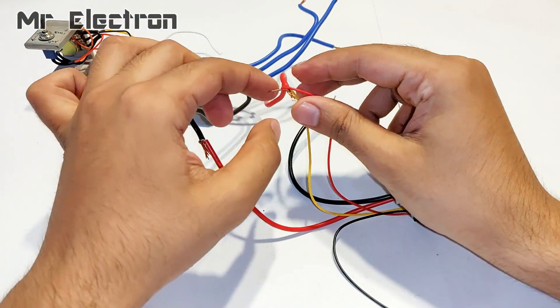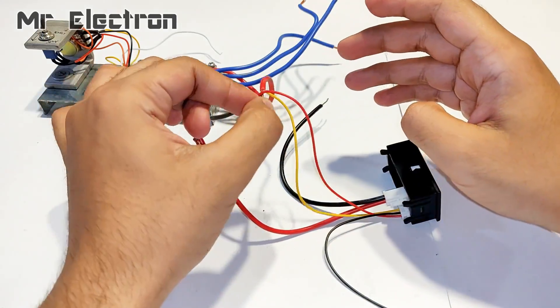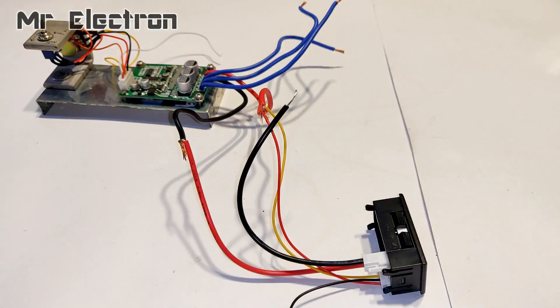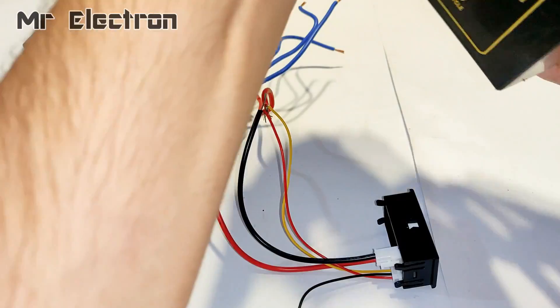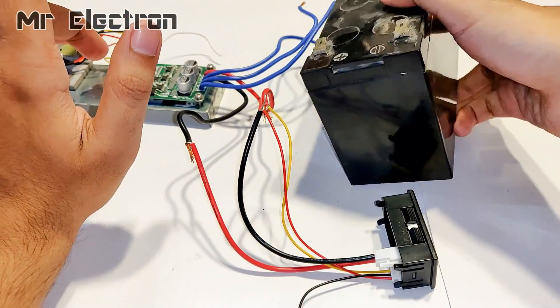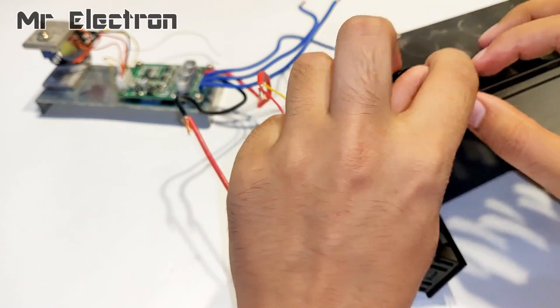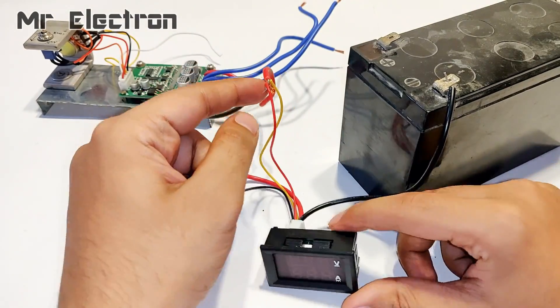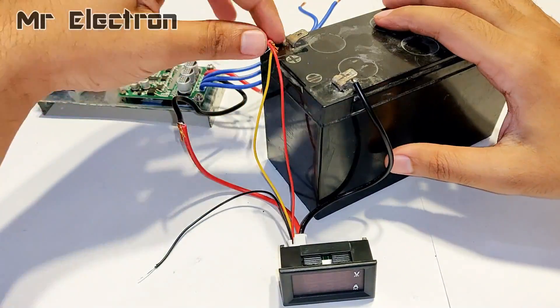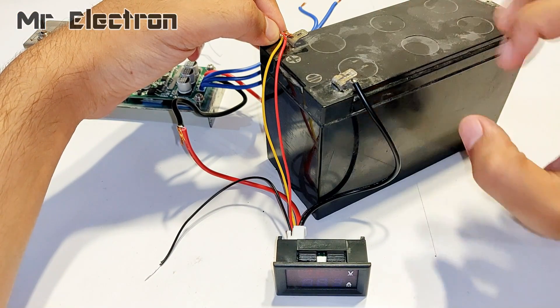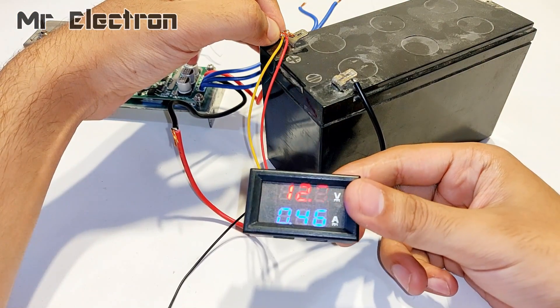This type of connection of the multimeter to the load is applicable only when you are powering up the multimeter with the same load with which your load is being operated. Like I am going to operate the controller with this UPS battery and with the same battery I am also going to operate this multimeter, so in that case this type of connection is applied.